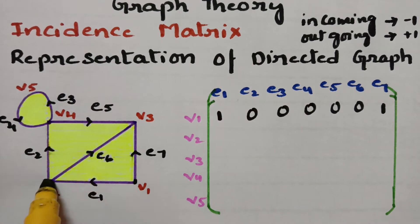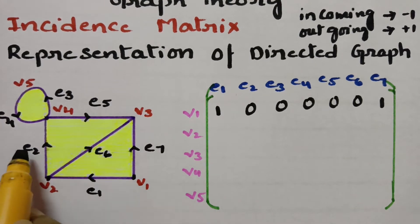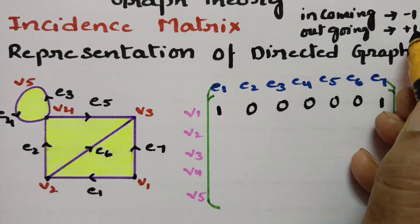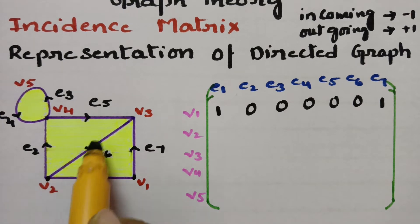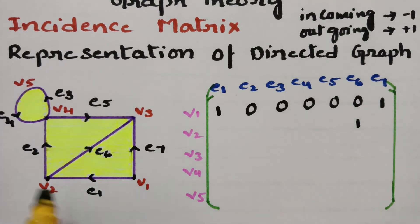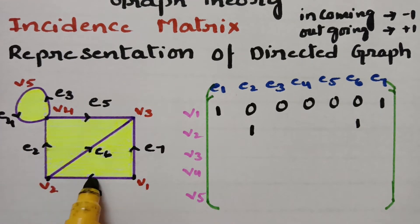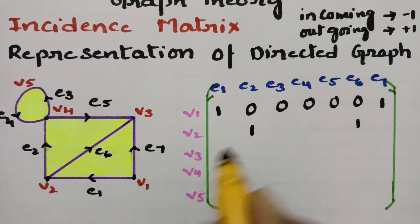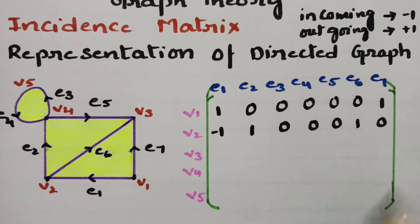Coming to v2, it has three edges: e1, e6, and e2. e6 is outgoing, so plus 1. e2 is also outgoing, so plus 1. e1 is incoming to v2, so e1 gets minus 1. These are the three edges; remaining are all zeros.